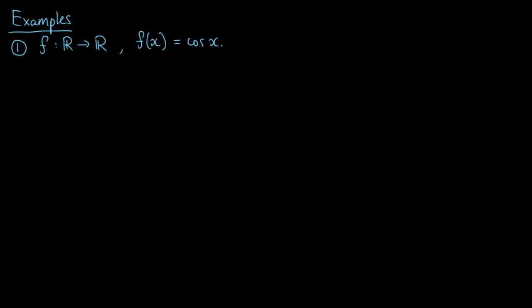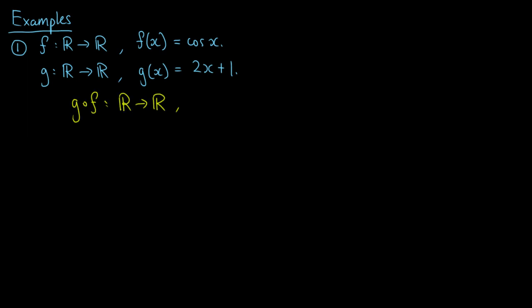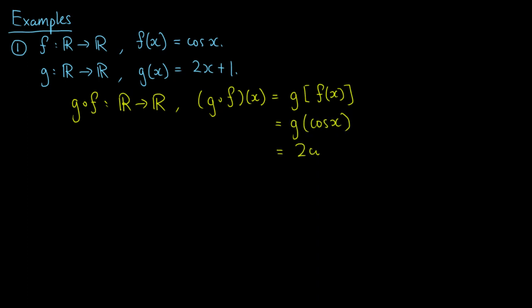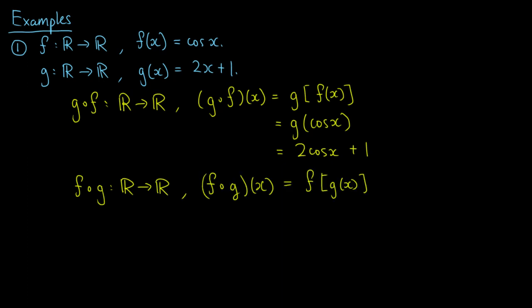Let's look at some examples. Let's define f from the real numbers to itself by f of x equals cos of x, and g from the real numbers to itself by g of x equals 2x plus 1. Then g composed f is a function from the real numbers to itself defined by (g ∘ f)(x) equals 2·cos(x) plus 1. On the other hand, we can also form f composed g, which is a function from the real numbers to itself defined by (f ∘ g)(x) equals f of (2x+1), which equals cos(2x+1).